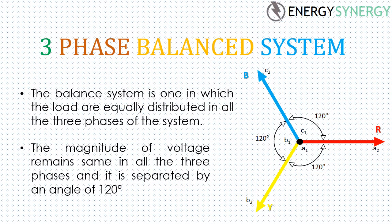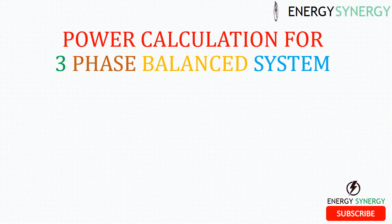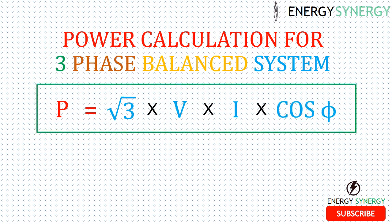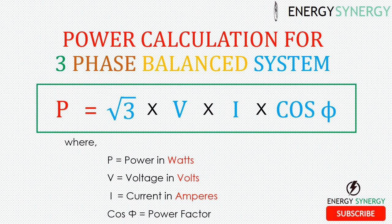The phases are separated by an angle of 120 degrees. So the formula to calculate power in a three-phase balanced system is: Power (W) = √3 × V × I × cos φ, where P is power in watts, V is voltage in volts, I is current in amperes, and cos φ is power factor. This formula is also used to understand the variation of current when voltage increases or decreases, and to easily calculate current when voltage, power factor, and power are known.